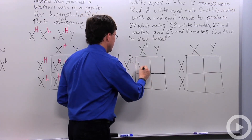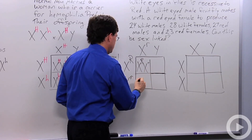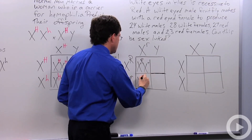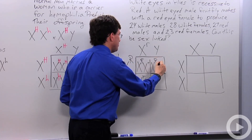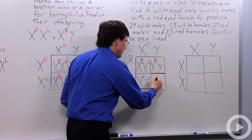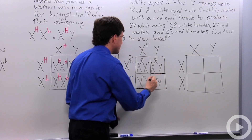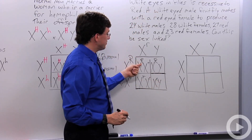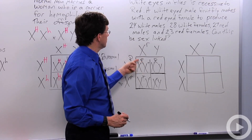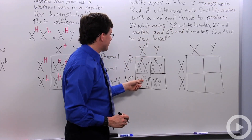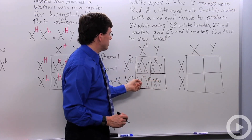Looking at the Punnett square: one daughter is X^R X^r, another daughter is X^r X^r. One son is X^R Y — red — and the other son is X^r Y — white. As predicted by the Punnett square, half of the female offspring have red eyes, half have white, and half of the male offspring have red eyes and half have white.